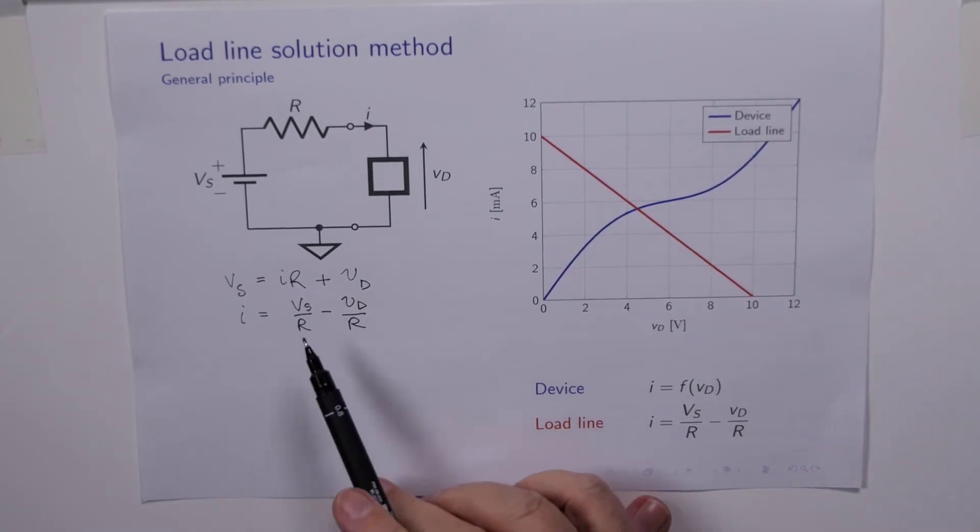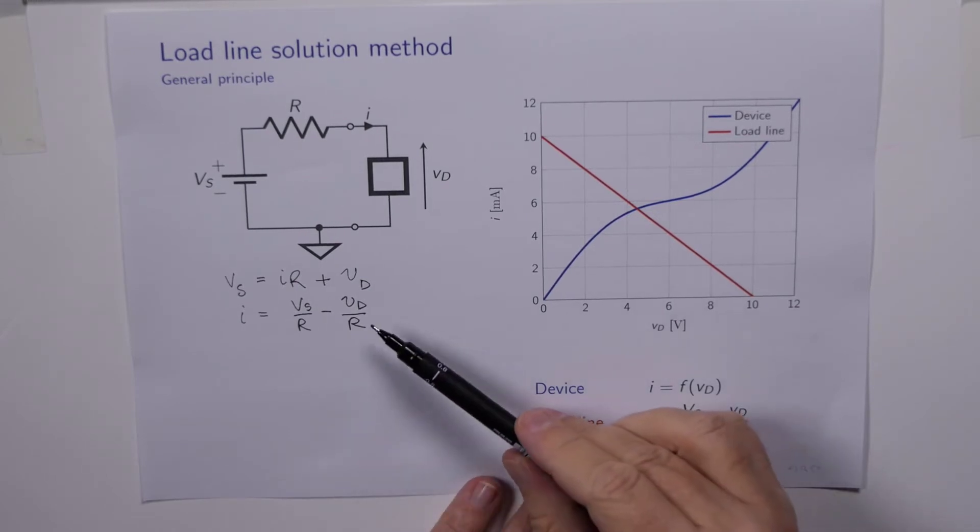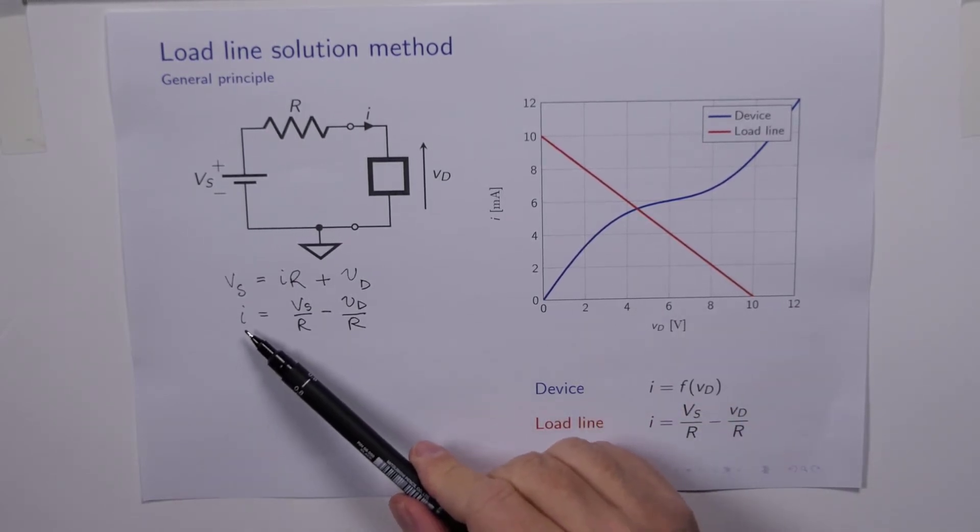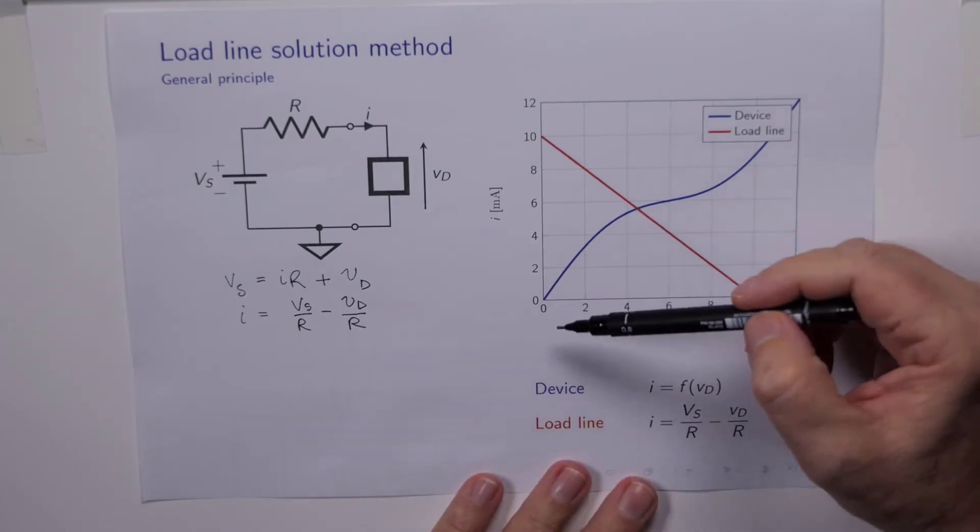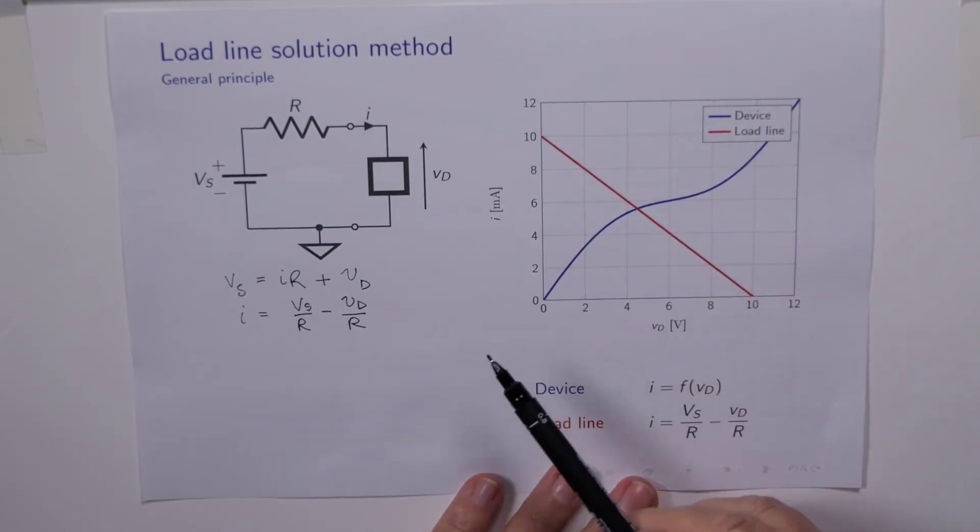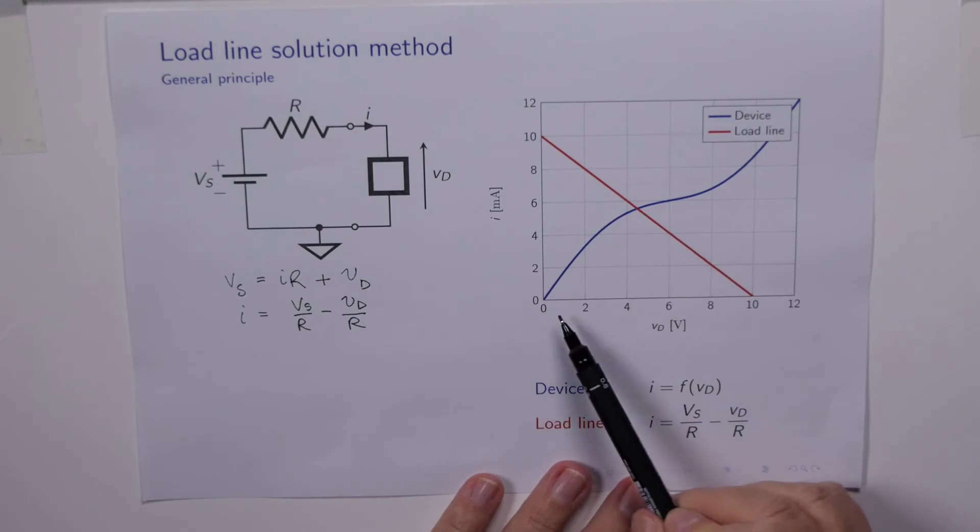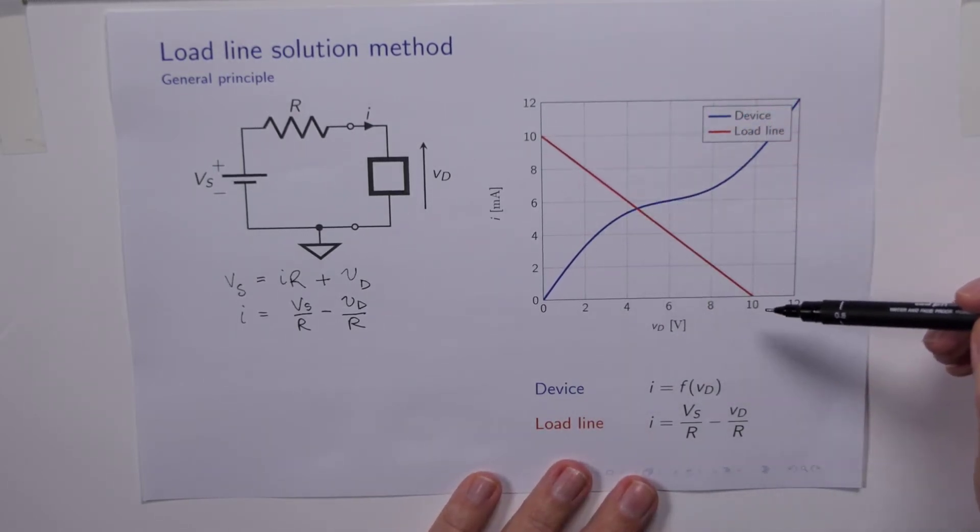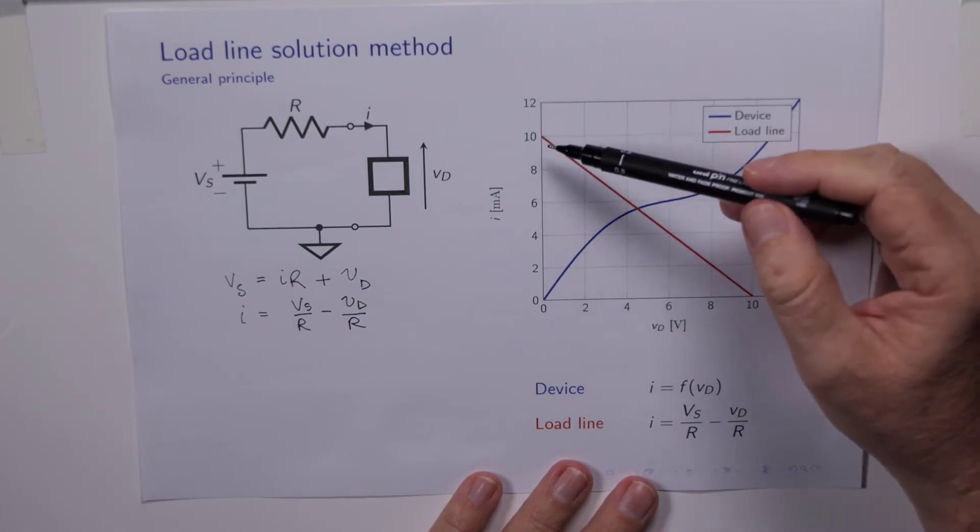Once we've been given Vs and R, we can draw this equation, right? Because it's simply a straight line. On the left-hand side we've got I, which corresponds to the y-axis. On the right-hand side we've got Vd, which corresponds to the x-axis. So for particular values of Vs and R, I've been able to draw that equation. The red line there. This is what we call the load line.